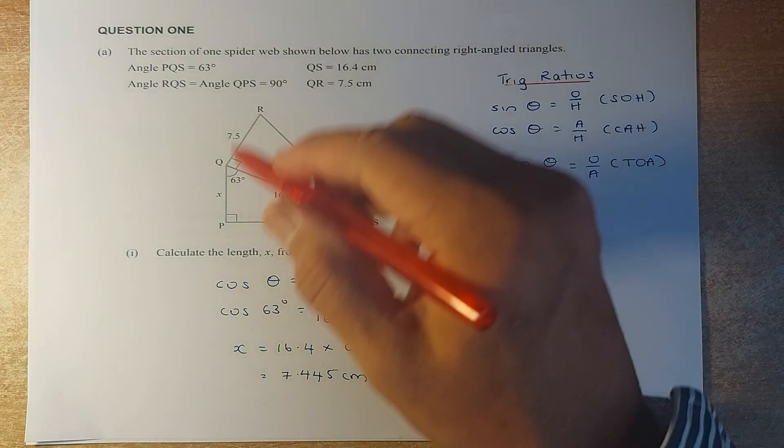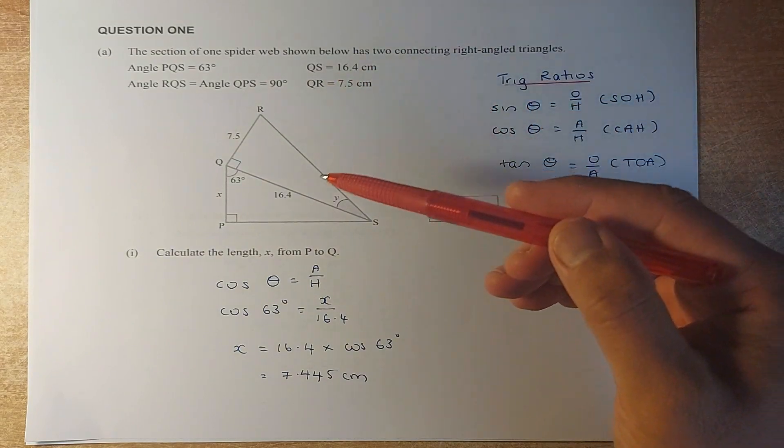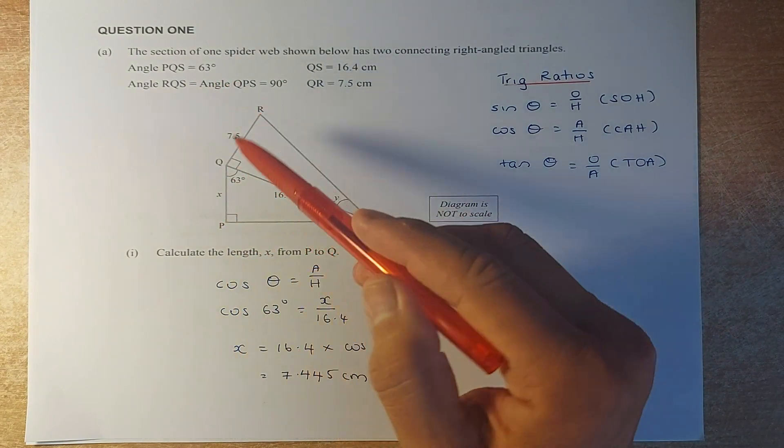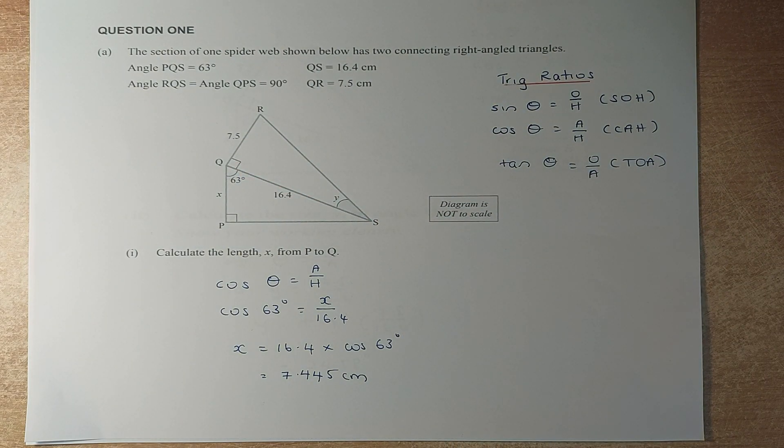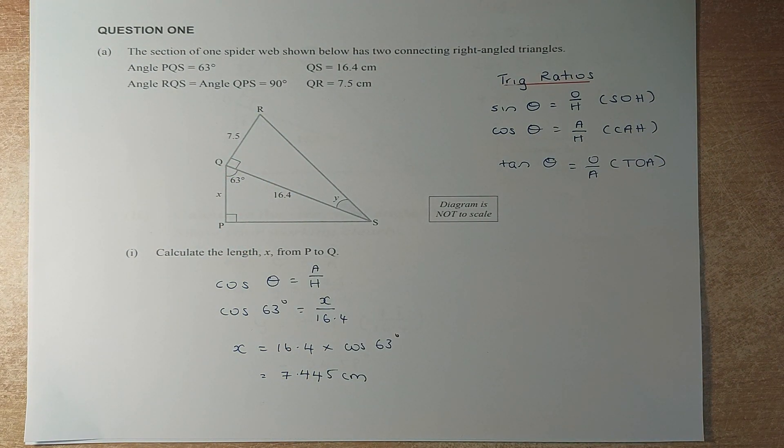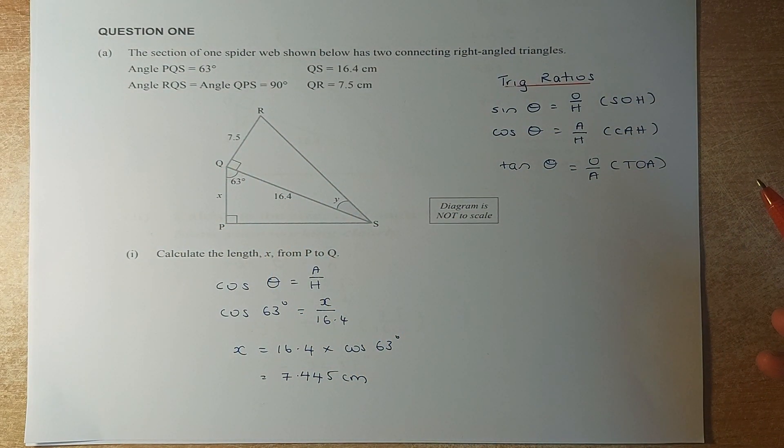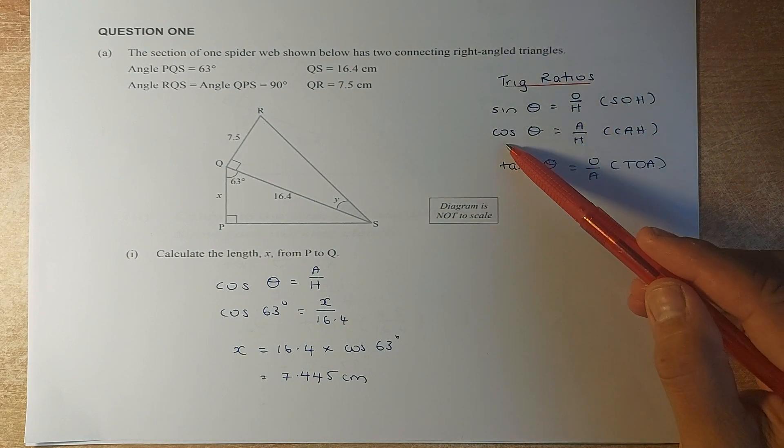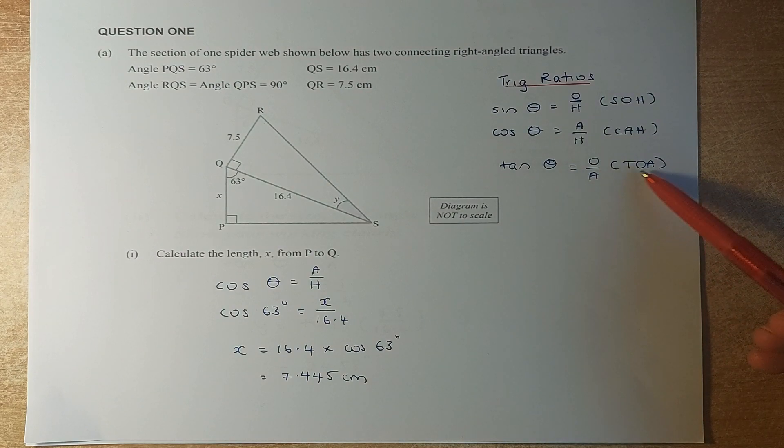So in question 1, they have a triangle. They say that angle PQS is 63 degrees. The length QS is 16.4 cm. Angle RQS and angle QPS are 90 degrees, and the length of QR is 7.5 cm. They want you to calculate the length X or PQ. Now we have to look at this triangle. This is a right-angle triangle and we have to use trig ratios. So trig ratios is either sine theta equals opposite over hypotenuse, cosine theta is adjacent over hypotenuse, and tangent theta is opposite over adjacent.